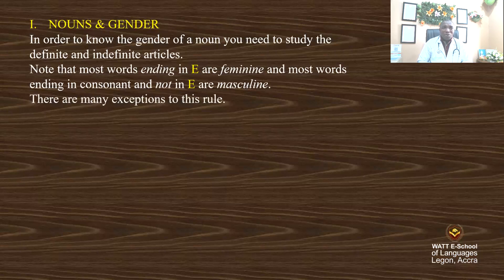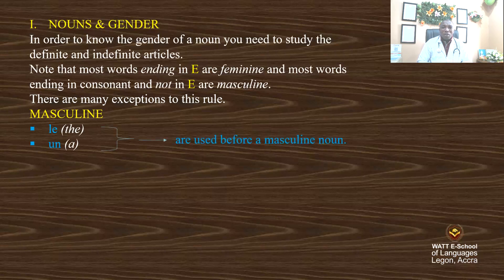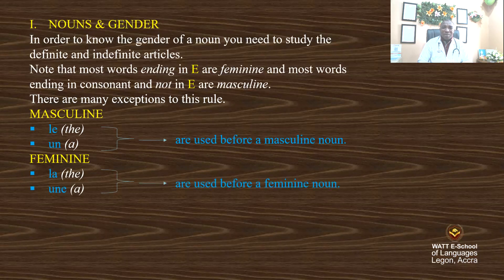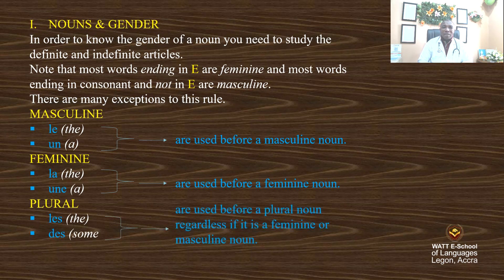There are many exceptions to this rule. Masculine articles are le and un — these are used before a masculine noun. Feminine articles are la and une — these are used before a feminine noun. Plural articles are les and des — these are used before a plural noun, regardless of gender, either feminine or masculine, provided the noun is in plural form.